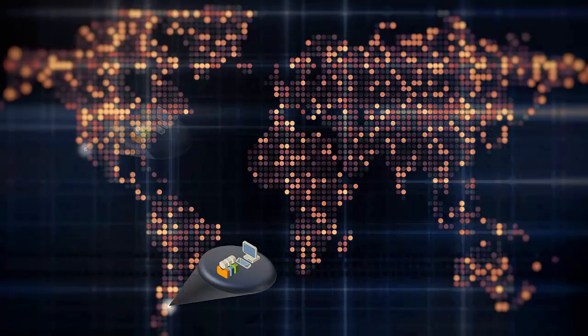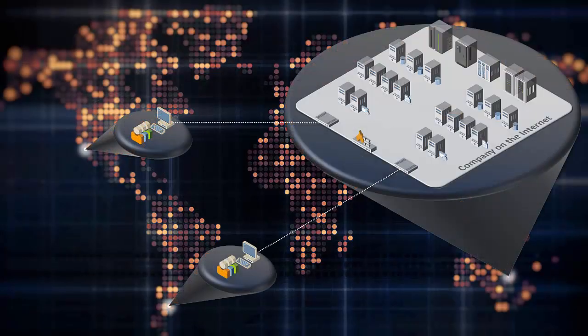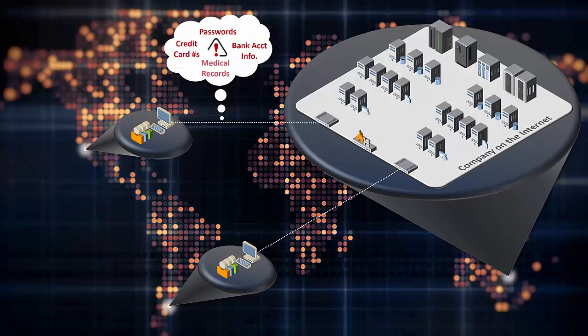When a person or machine connects to an organization across the Internet, they want to know that the sensitive data they're sending is going to the right organization. In addition, they want to make sure that somebody in the middle can't see that data.